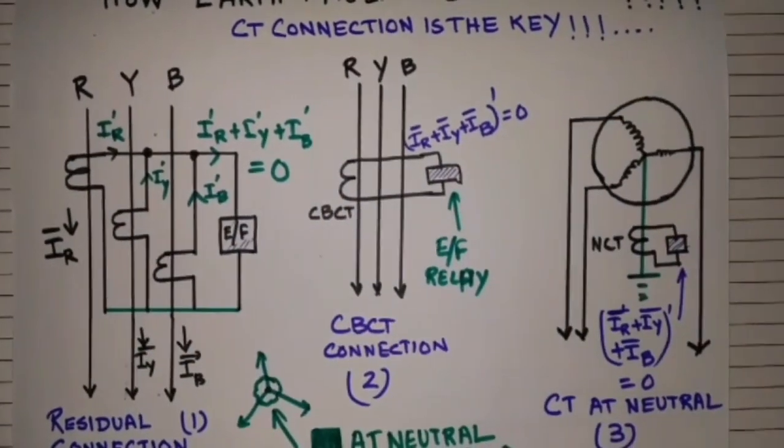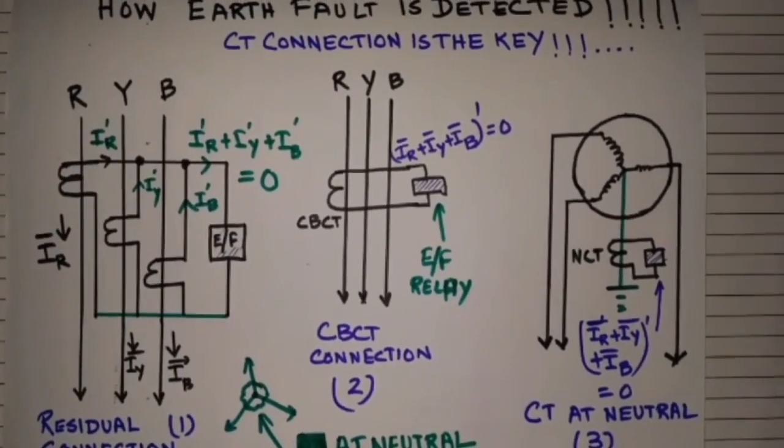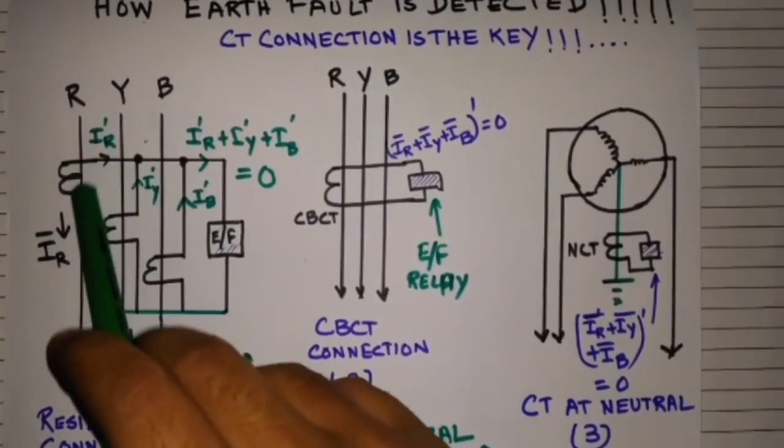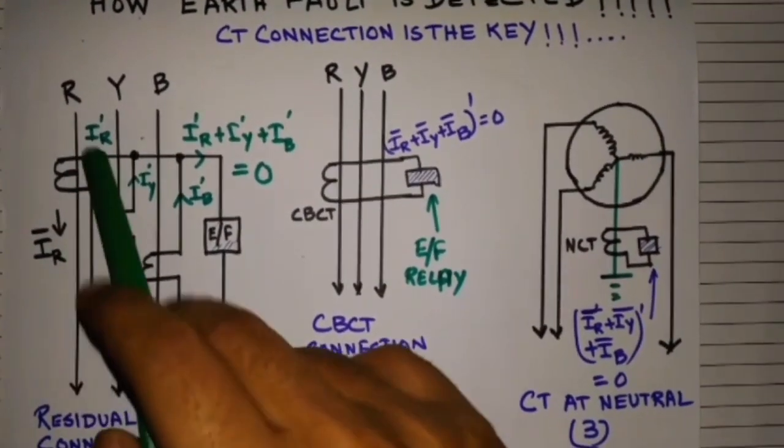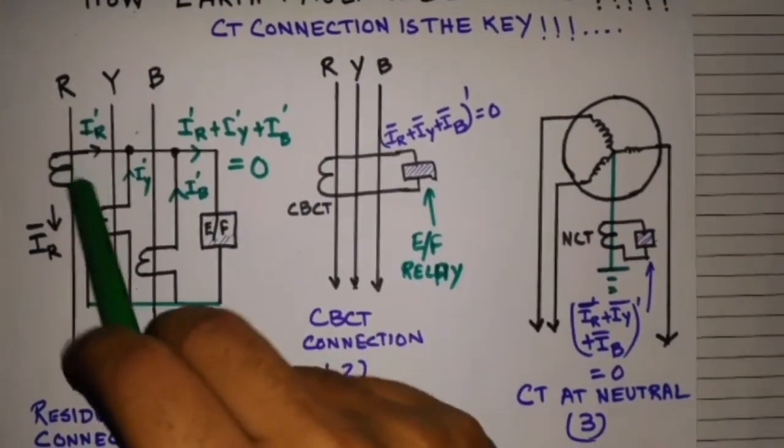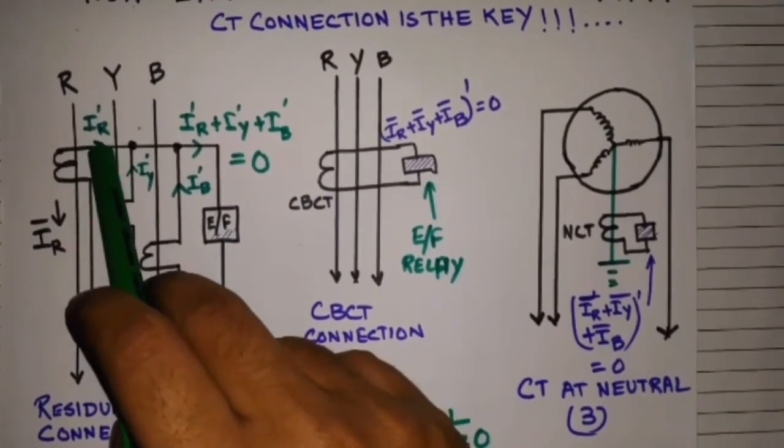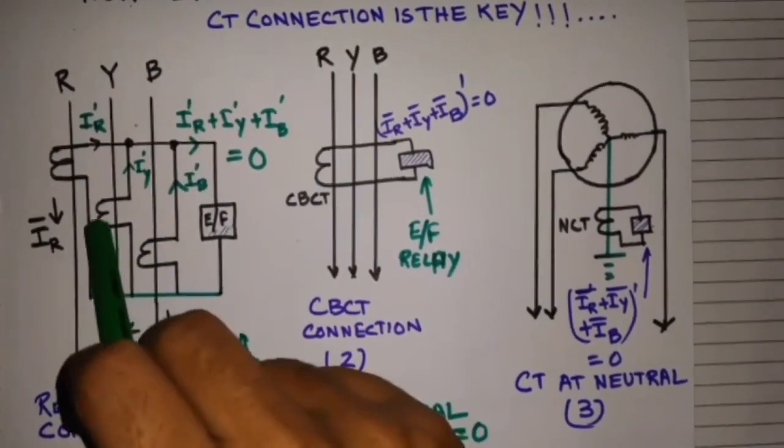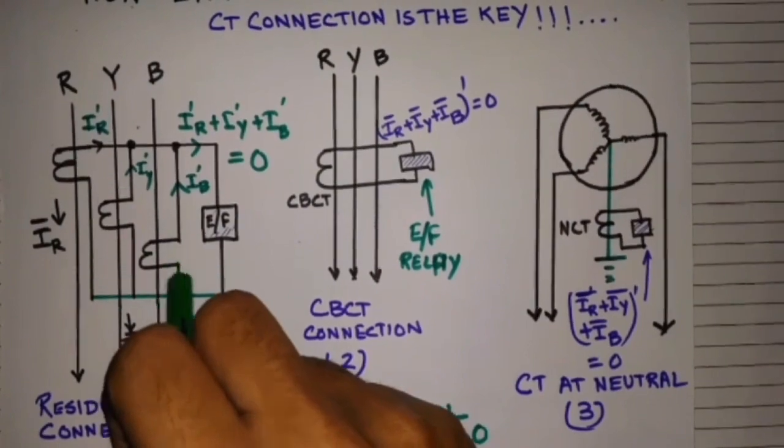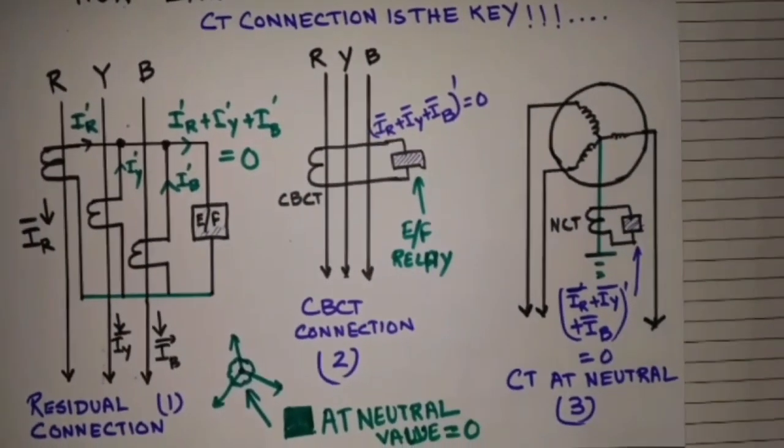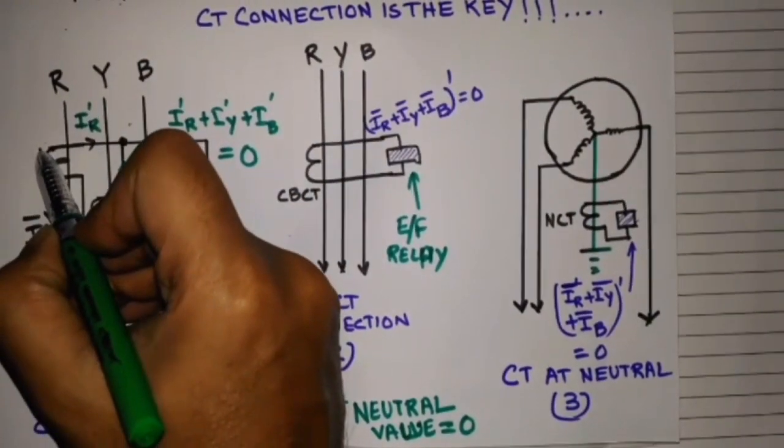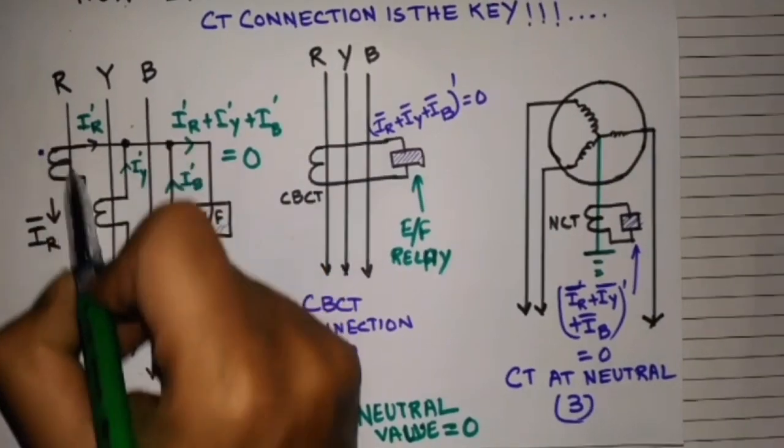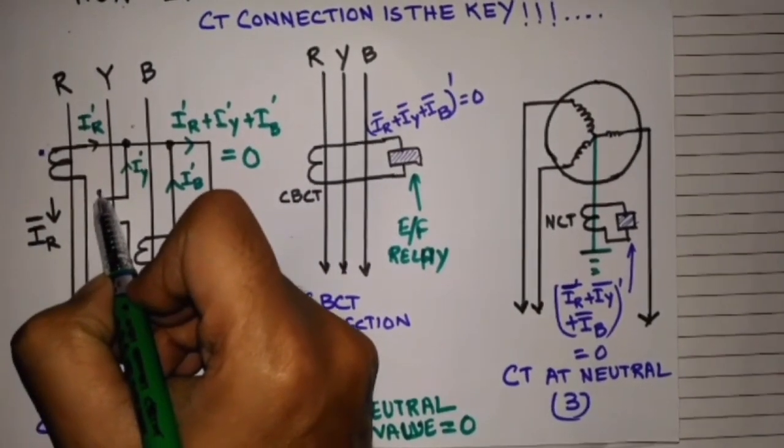So first we study the CBCT connection. Now see, this is line R, Y, and B. Three CTs are connected, and these three terminals are shorted together and these three terminals are shorted together.